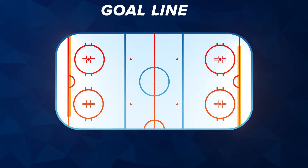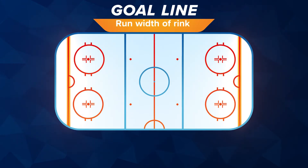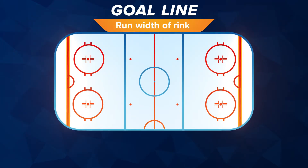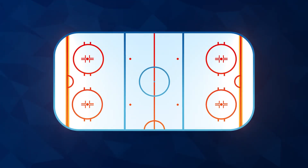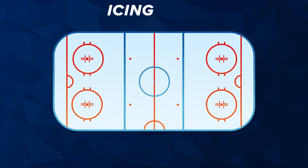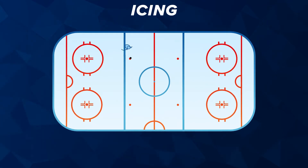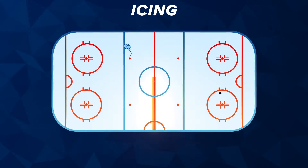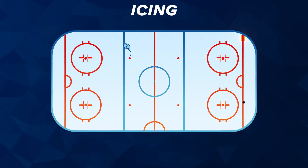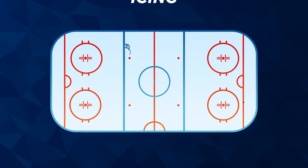Goal line: the two red lines that run the width of the rink and are lined up with the goal opening. Icing: if a player shoots the puck and it crosses the center line and the opponent's goal line, that's icing.